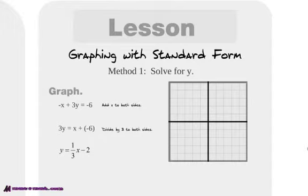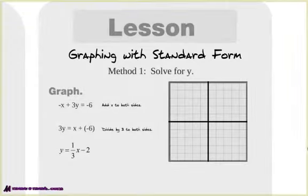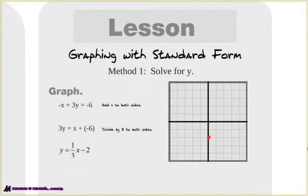Then get rid of the 3 in front of the y by dividing both sides by 3, and we get y equals one-third x minus 2. Now you can graph that — much easier to graph this than the standard form. We're going to start off at negative 2 on the y-intercept, and then our slope is 1 over 3, so we go up 1 over 3, and down 1 back 3. And that is our line. Looks good — love the red.